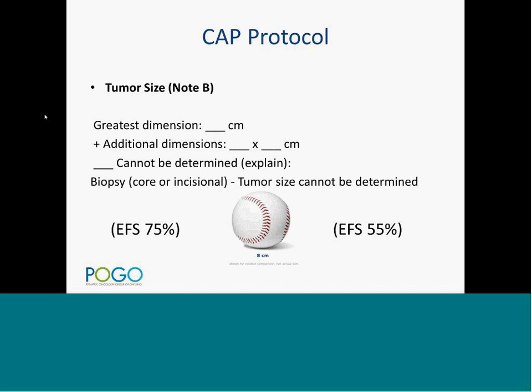Tumors eight centimeters or below, provided other risk factors are equal, have a more favorable prognosis than those greater than eight centimeters. According to AJCC staging, eight centimeters is the cutoff to raise the primary tumor from pT1 to pT2. North American studies use this eight-centimeter cutoff, while European studies use a tumor volume of 200 milliliters. Reporting additional dimensions helps estimate tumor volume and enables comparative studies.